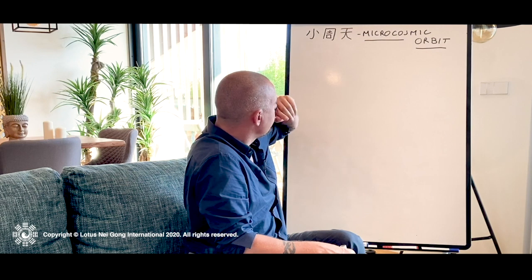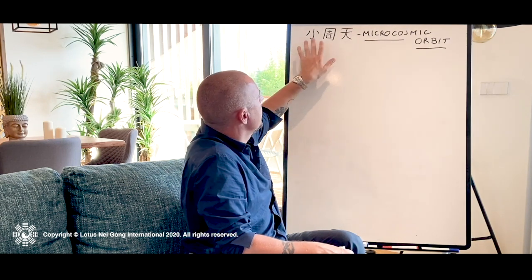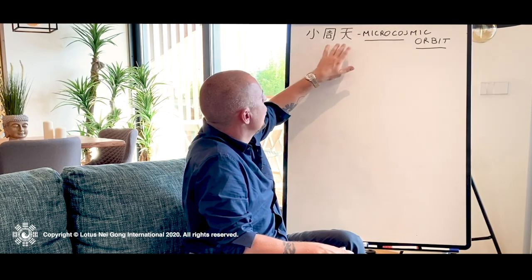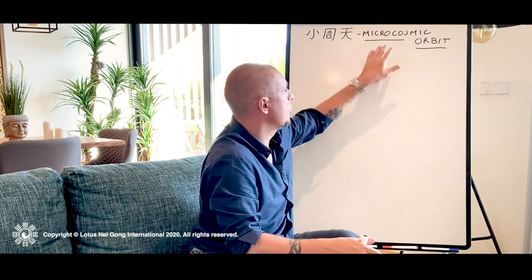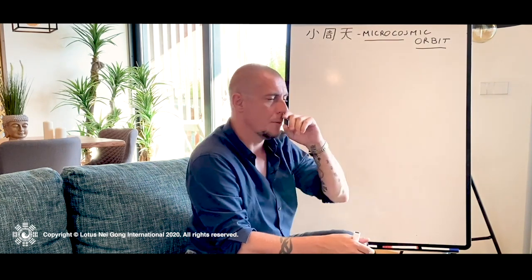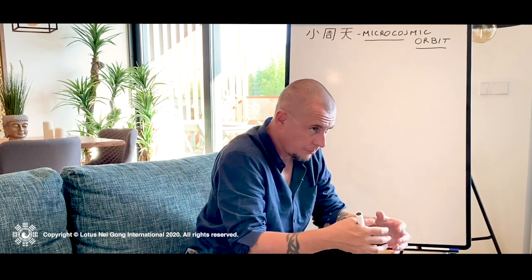Xiaojou Tian essentially means smaller or lesser — small orbits of heaven. This is what it refers to. People call it the microcosmic because lesser heaven, the small heaven, the Xiaojou Tian, is the heaven that's on the inside of your body.